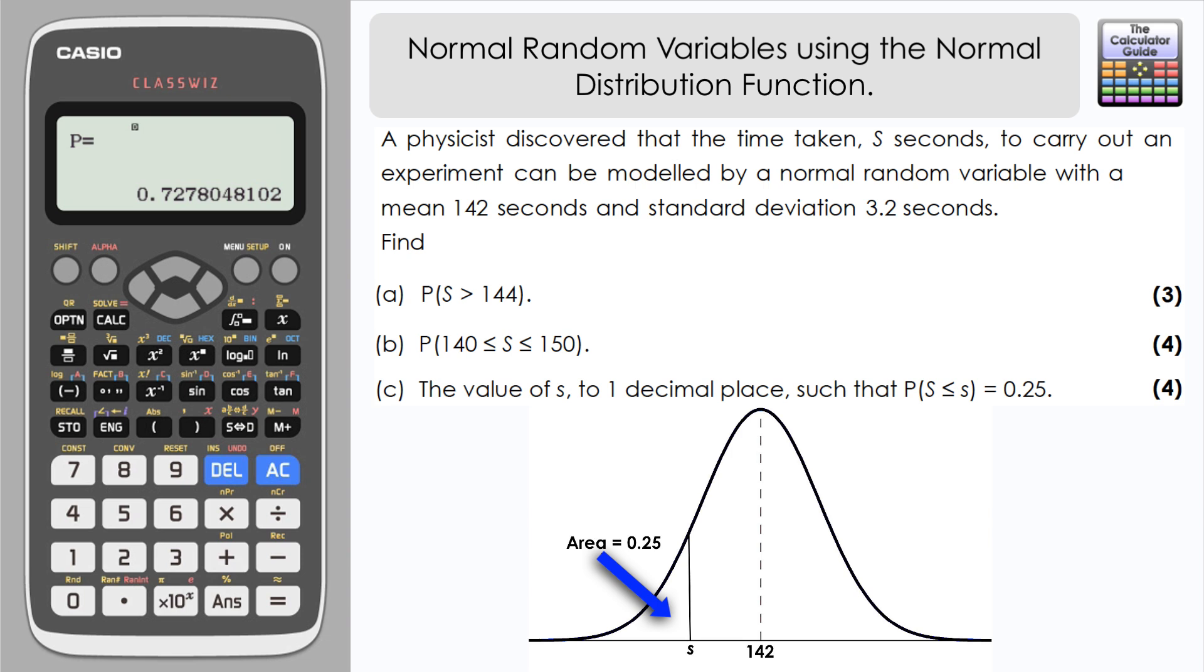What the question is really asking is what value of S in seconds would we need so that the area or probability of having a value of S less than that is 0.25. So essentially it's the quarter, the bottom quarter, or 0.25 of our graph. What time in seconds would that be so that we've got a quarter probability of a value lying below that.